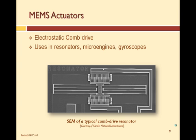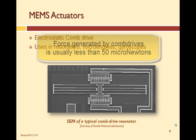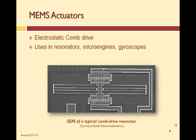An example of a micro actuator, or MEMS, is the electrostatic comb drive. Comb drives are used in many MEMS applications, such as resonators, micro engines, and gyroscopes. The force generated is low, usually less than 50 micronewtons. However, these devices are predictable and reliable, making them very useful for a variety of micro applications.